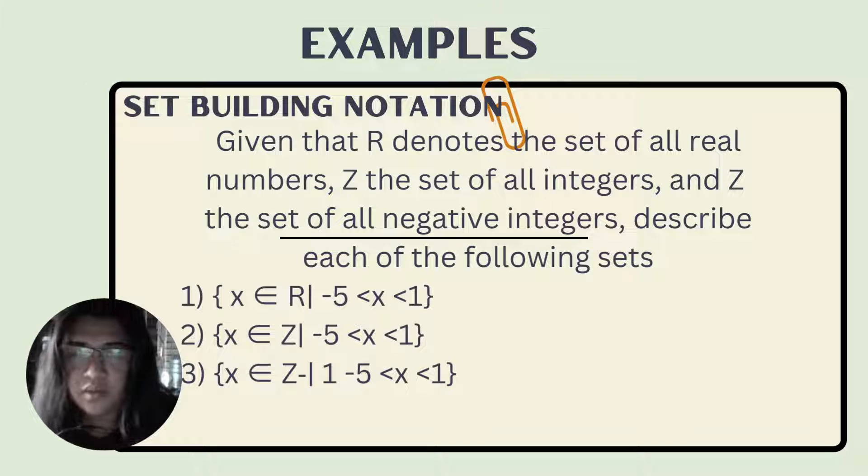I have here an example of set building notation. Given that R denotes the set of all real numbers, Z the set of all integers, and negative Z the set of all negative integers, describe each of the following sets. Number 1: set of all X elements of real numbers such that negative 5 is less than X and X is less than 1. Number 2: set of all X elements of integers such as negative 5 less than X and X is less than 1. Number 3.